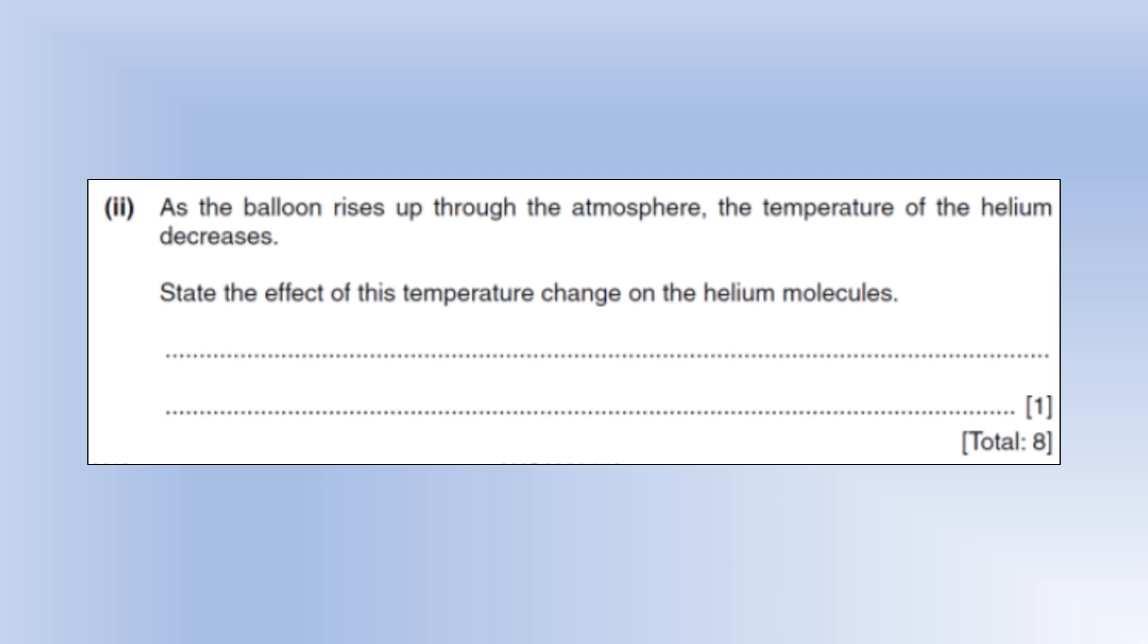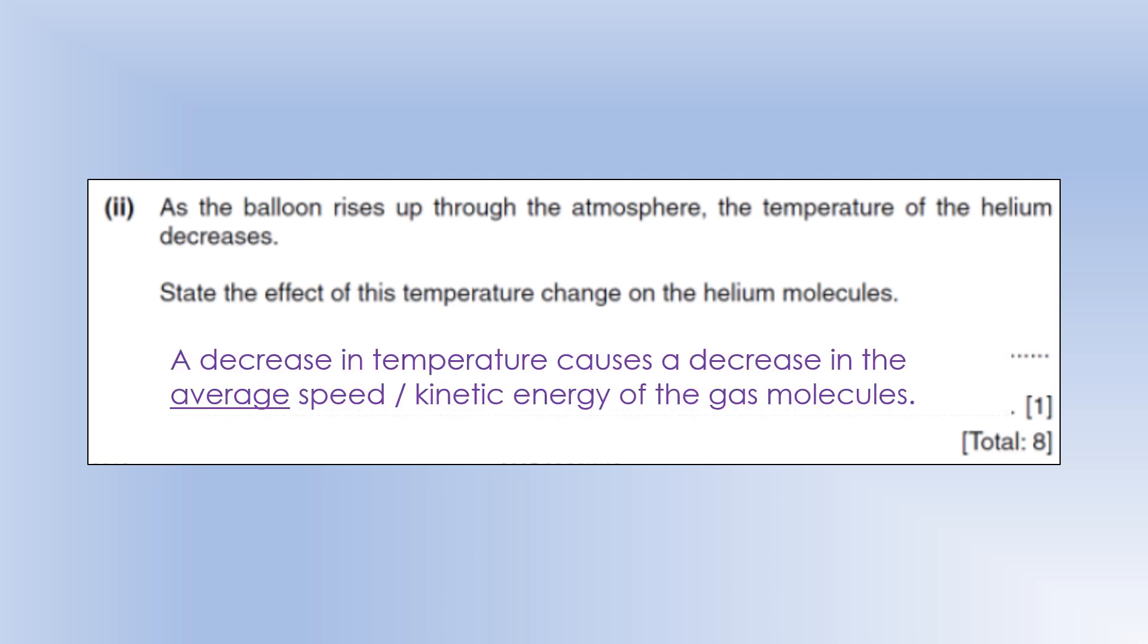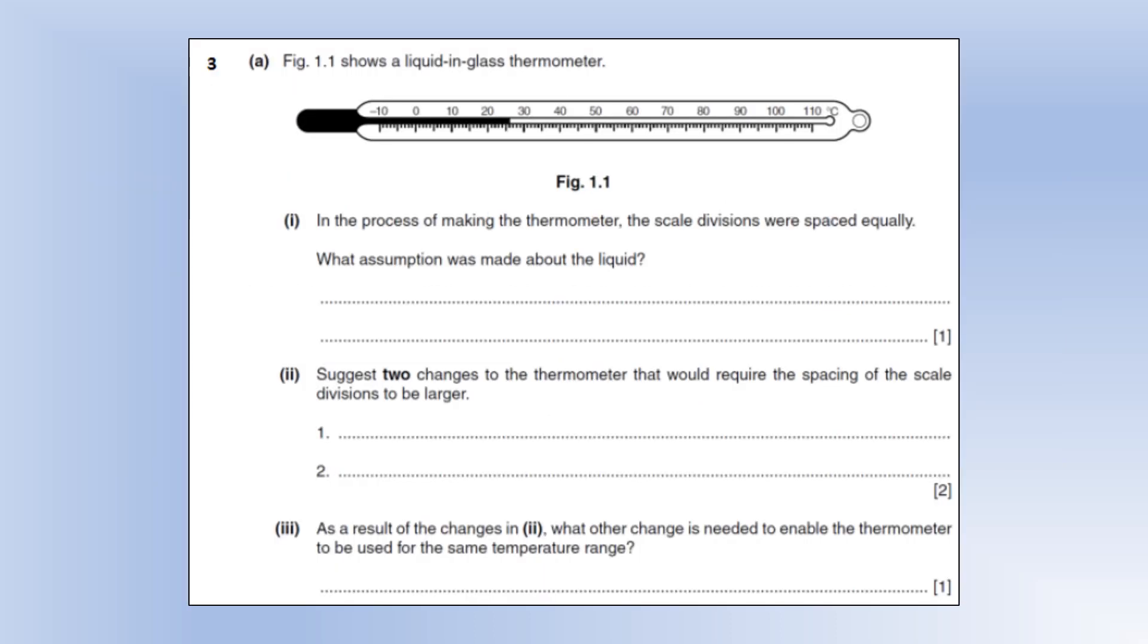Okay, so as the balloon rises up through the atmosphere, the temperature of the helium decreases. State the effect of this temperature change on the helium molecules. Well, a lower temperature means lower average speed or lower average kinetic energy. Those two things basically say the same thing. So that's the key thing to remember. Temperature and kinetic energy or speed are directly related to each other.